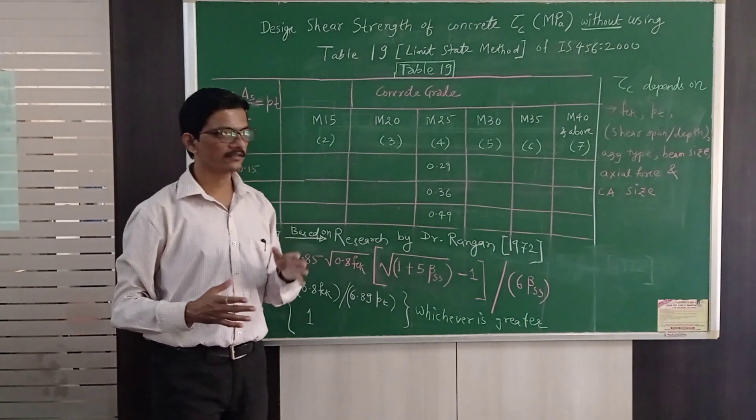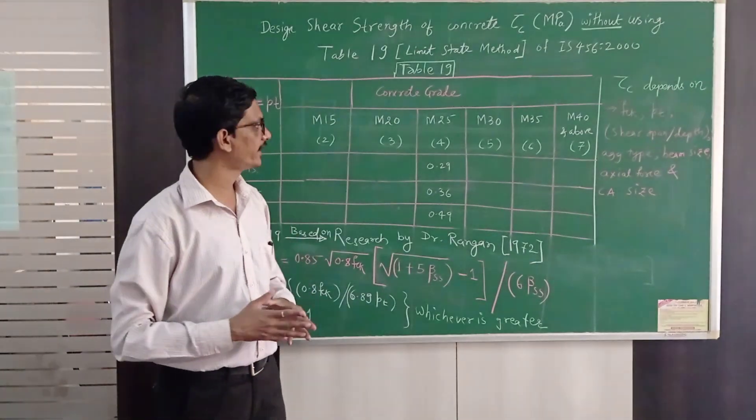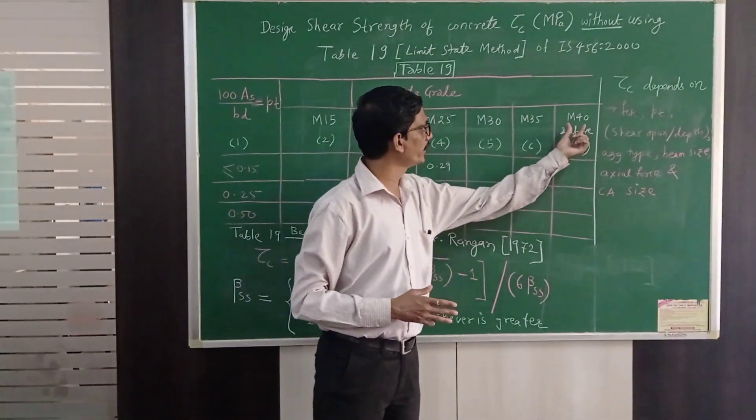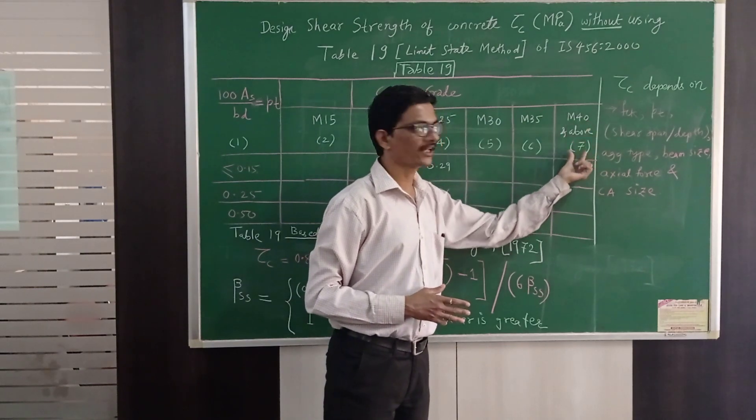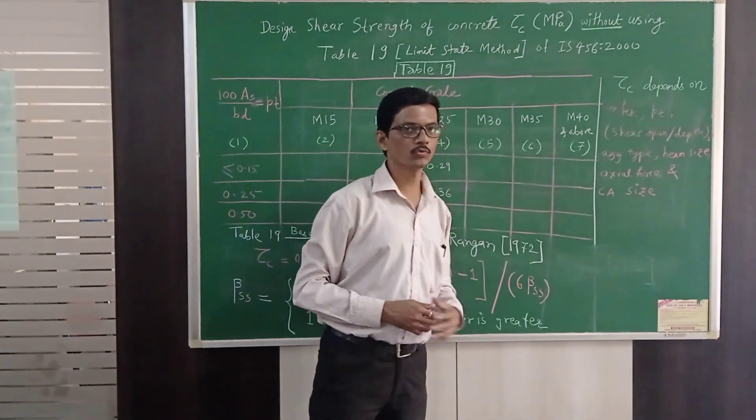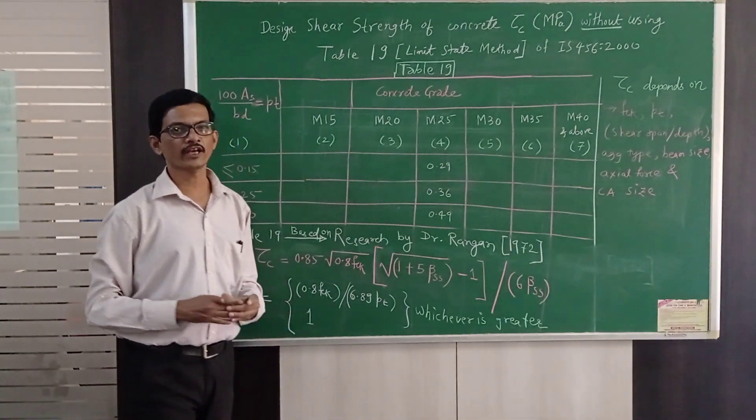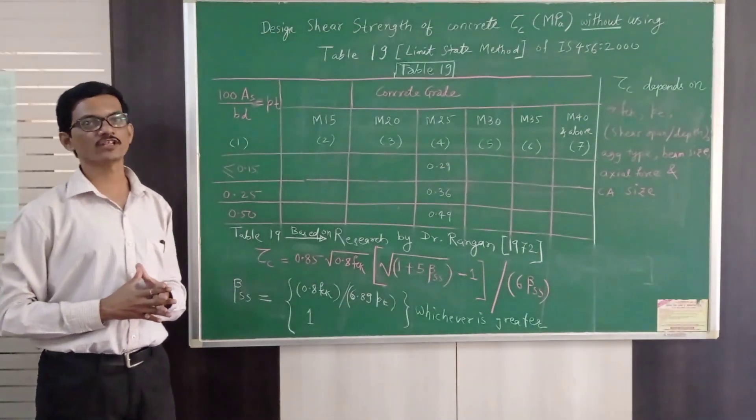But again let me come to a vital point that here this table is shown only up to M40 and above. Because in 1972 in India M40 also was considered as a high strength concrete.